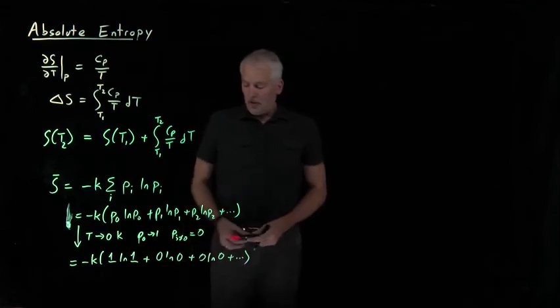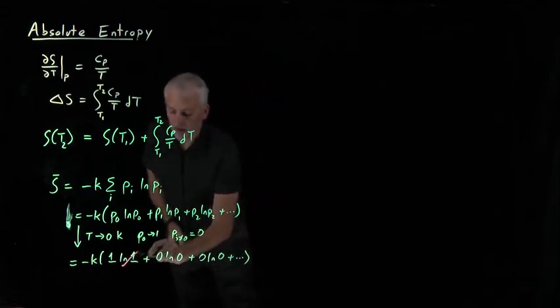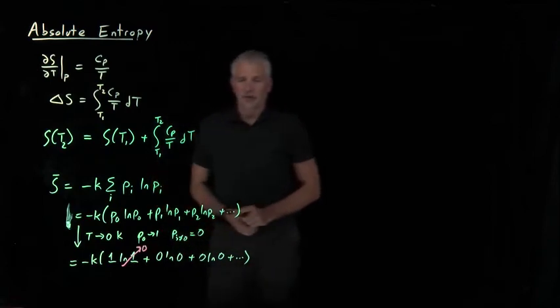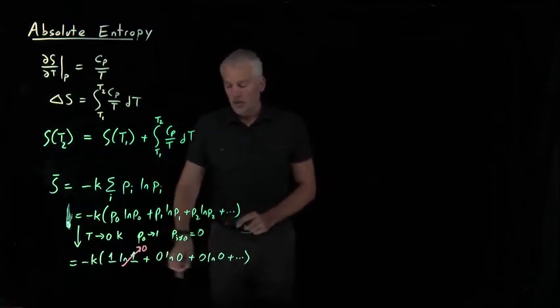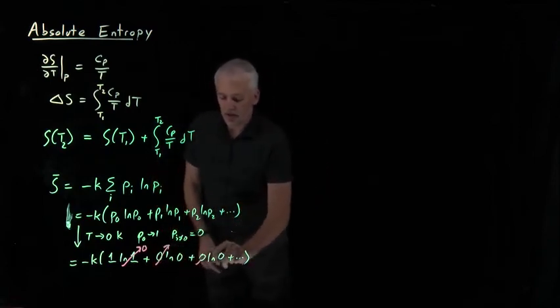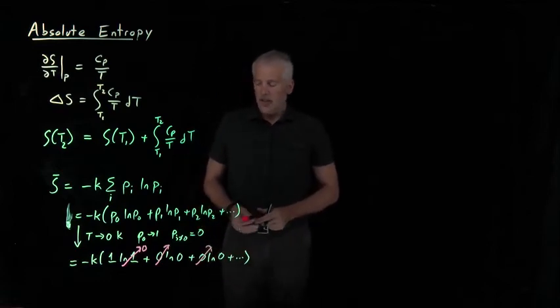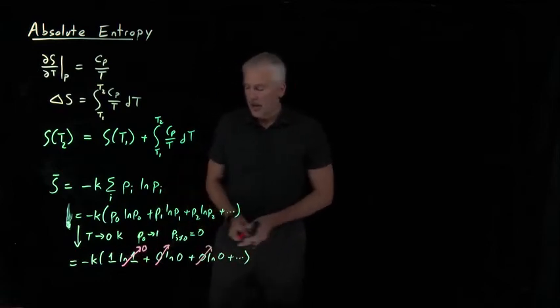We can evaluate each of those terms, but they all evaluate to zero. Log of one is zero, so that kills this first term. Zero is, of course, zero, so that kills the second term. All the zeros kill all the other individual terms. So each one of these terms is zero, so the entropy